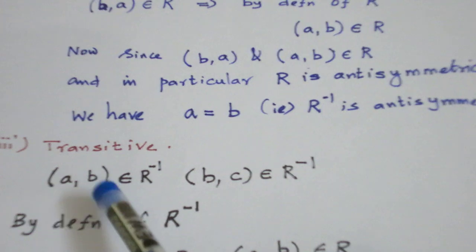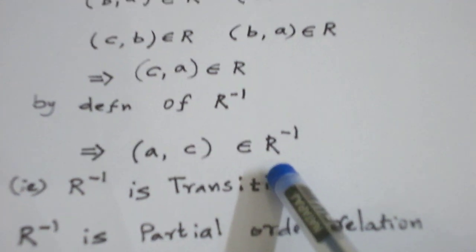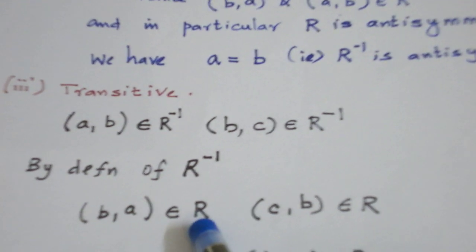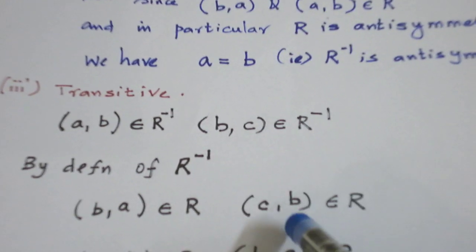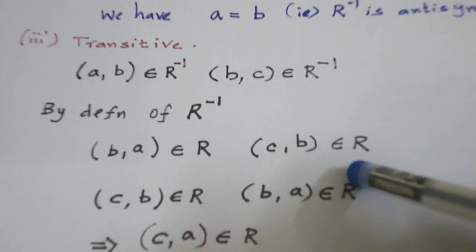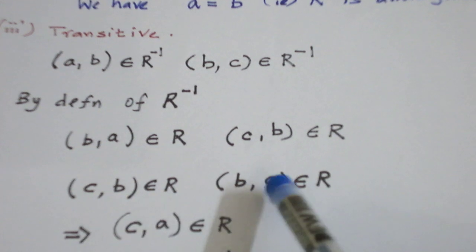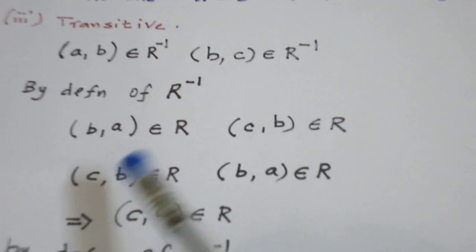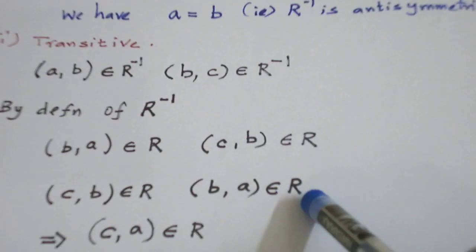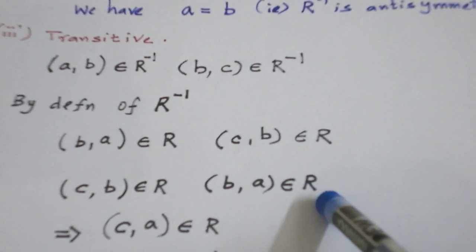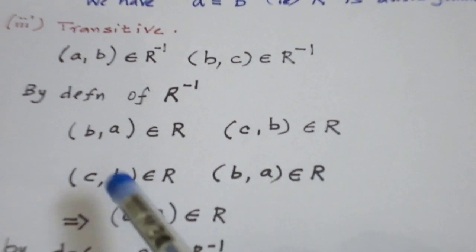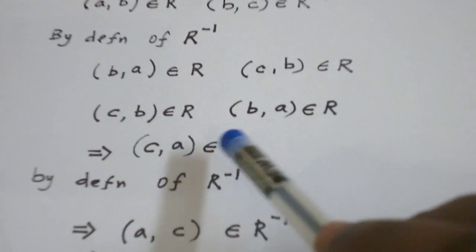Now transitive. Suppose (a, b) belongs to R inverse and (b, c) belongs to R inverse. We are supposed to prove (a, c) belongs to R inverse. Since (a, b) belongs to R inverse, its reverse (b, a) belongs to R. Since (b, c) belongs to R inverse, its reverse (c, b) belongs to R. Rewriting: (c, b) belongs to R and (b, a) belongs to R. So C is related to B, and B is related to A. Using the transitive property — R is a partial order relation, so R is transitive — C is related to A. So (c, a) belongs to R.